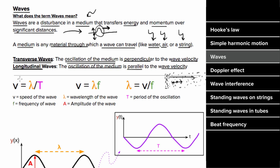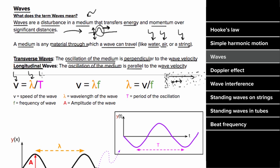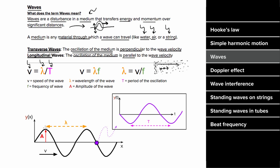For every type of wave, the speed of that wave disturbance equals the wavelength divided by the period. In other words, if you watched a wave crest, it would move one wavelength every period. Since speed is distance per time, the speed of the wave crest is one wavelength per period.